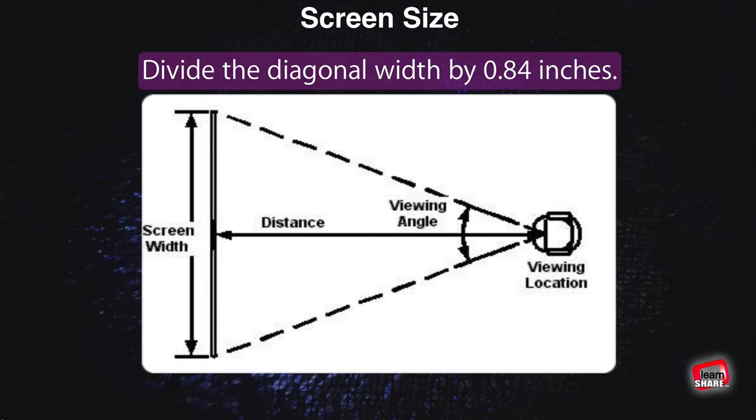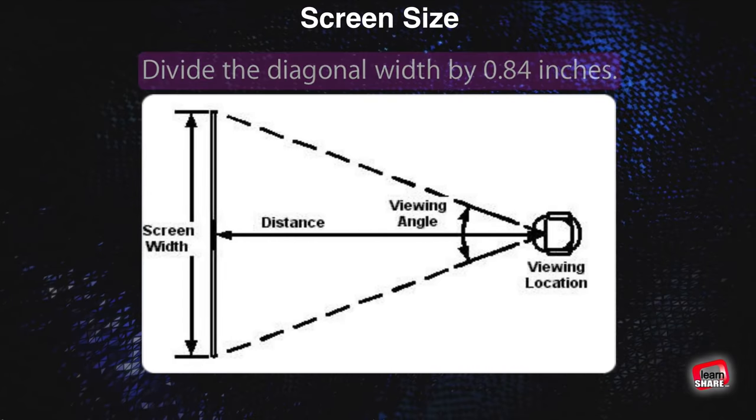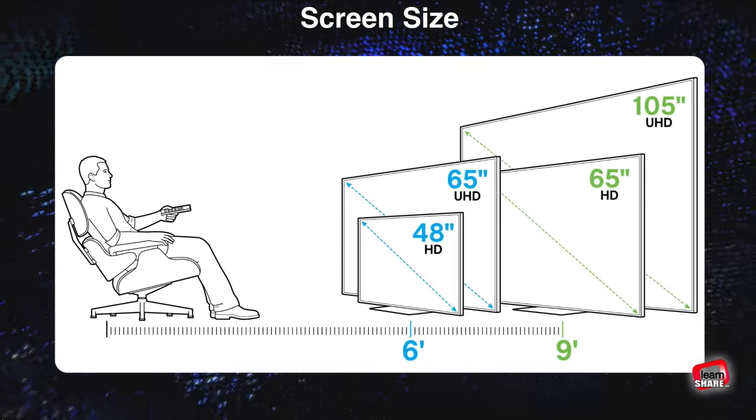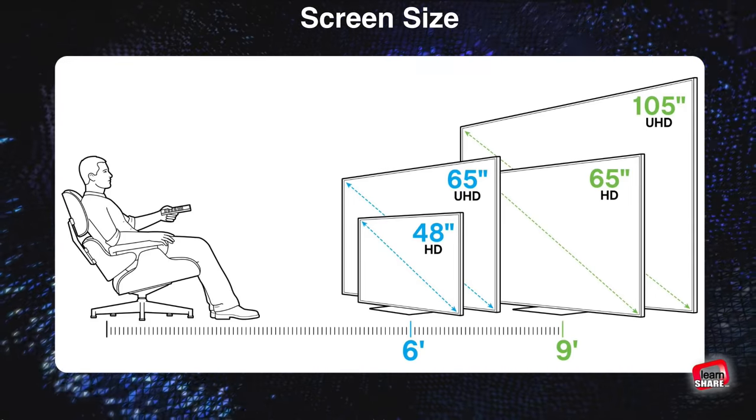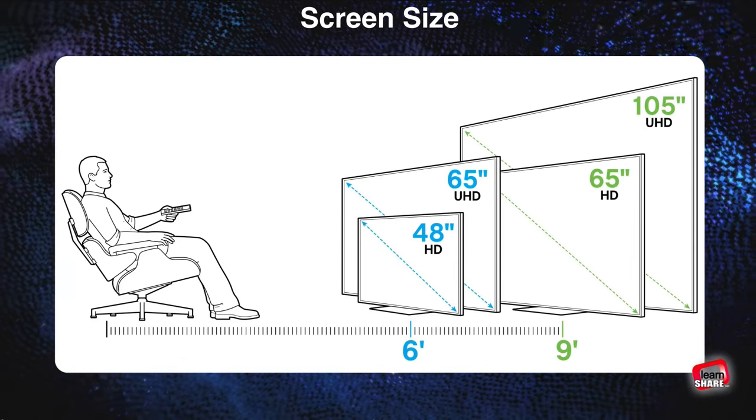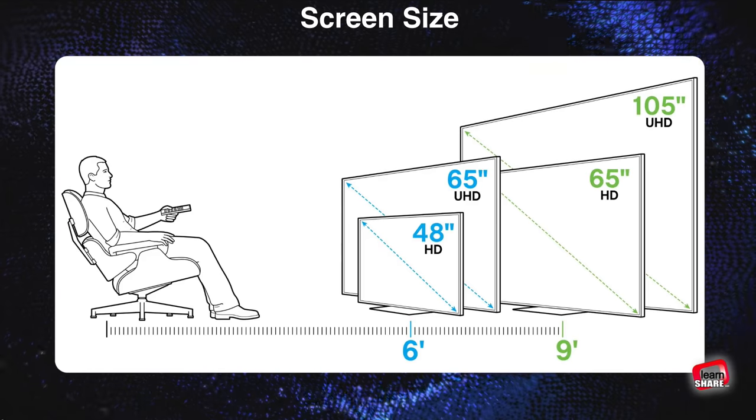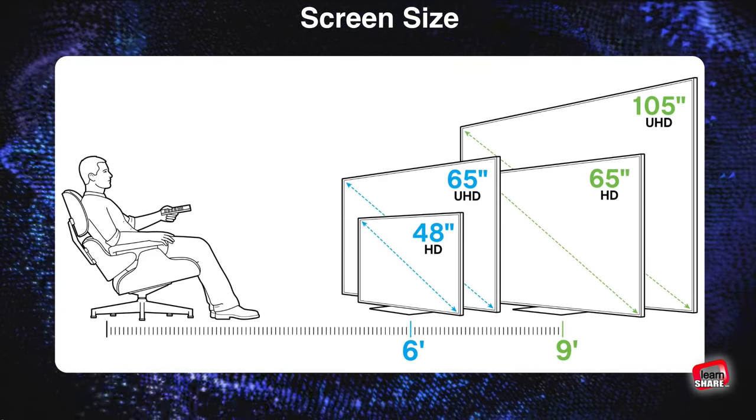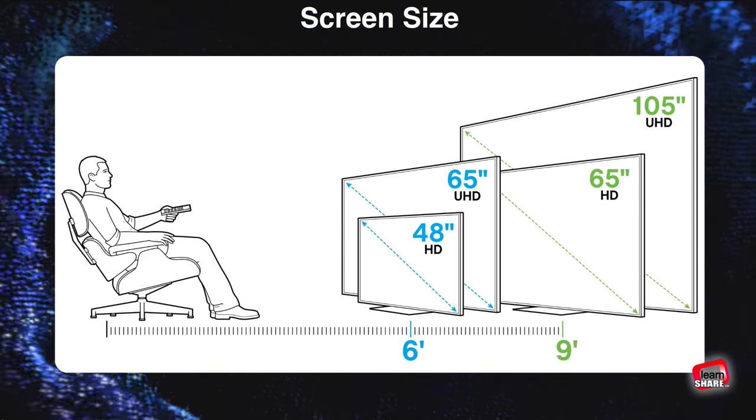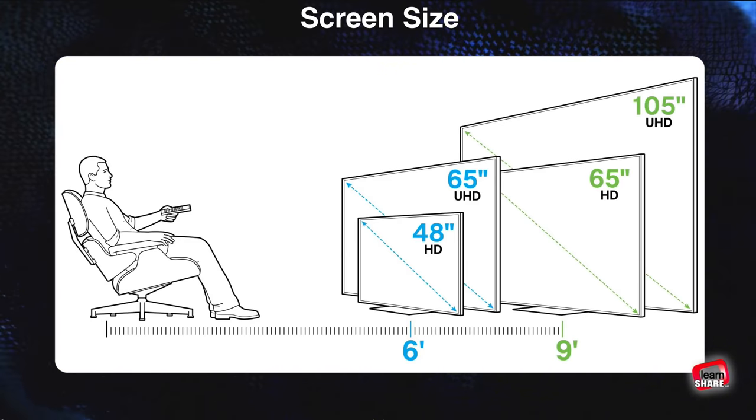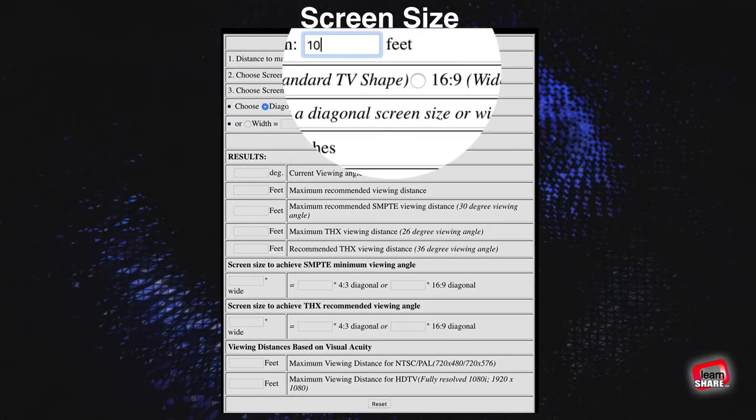Using this method, if you get a 65 inch TV, you should sit around 6.5 feet from it. Another calculation you could try is a seating position between one and a half or two times the diagonal width of your screen. Using this approach, a 65 inch screen would work for a viewing distance between 8.1 and 10.8 feet.